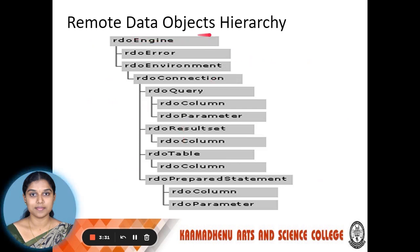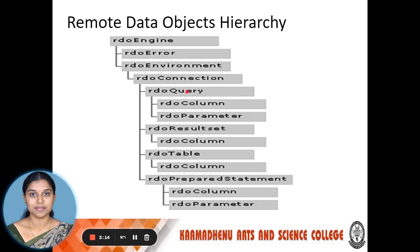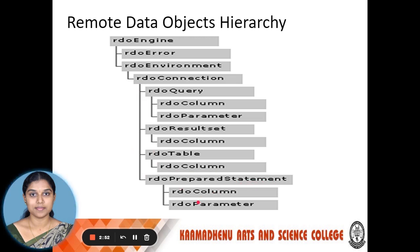This is the Remote Data Object hierarchy. This diagram illustrates the RDO hierarchy. First, RDO Engine and RDO Error, then RDO Environment, RDO Connection, RDO Query, RDO Column, and RDO Parameter from the RDO Query. RDO Result Set comes from the RDO Connection, and RDO Column is also part of the result set. Additionally, RDO Table contains RDO Column, and RDO Prepared Statement contains RDO Column and RDO Parameter. This is the full hierarchy of RDO — Remote Data Object.